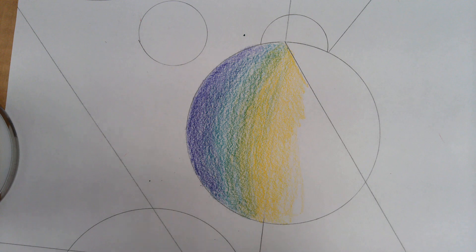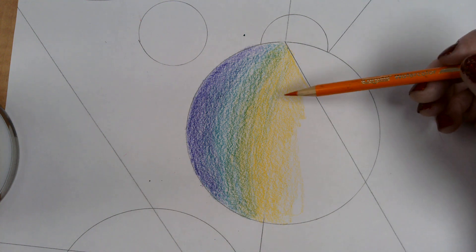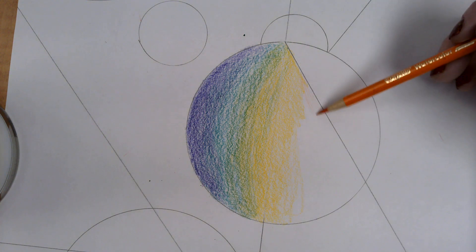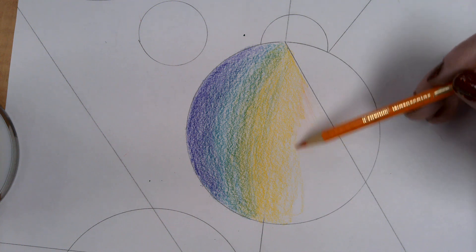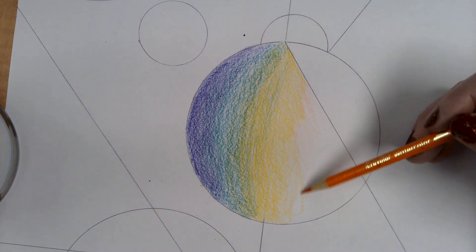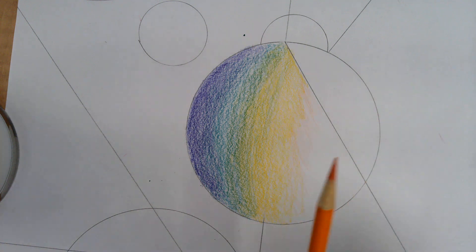And I want this yellow to go into the green a little bit more. And then I'm going to transition to an orange. So I'm going to lightly, very lightly. And then I'm going to go back in with the yellow.